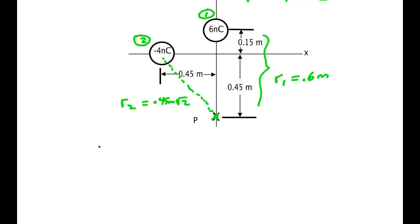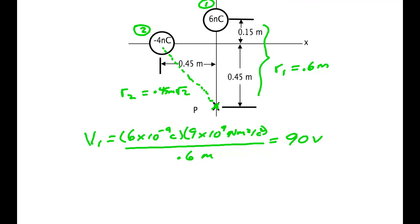So V1 is equal to six times ten to the minus nine coulombs times k, nine times ten to the ninth newton meters squared per coulomb squared, all of that divided by 0.6 meters. Nine times six divided by 0.6, that's going to give us ninety volts, a positive ninety volts.